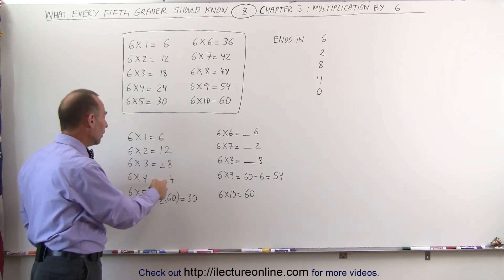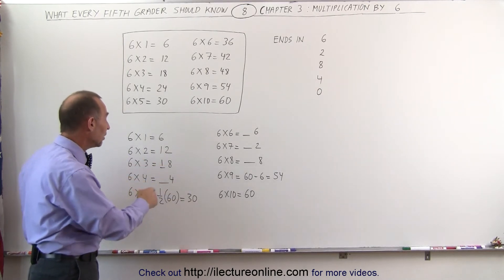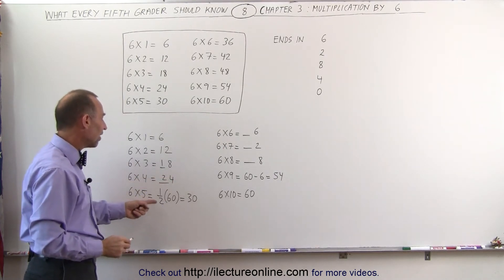The next one ends up in a 4, but if you add 6 to 18, you get something more than the teens. Now you're in the 20s, so the answer would be 24. 6 times 5 is half of 60, therefore you get 30.